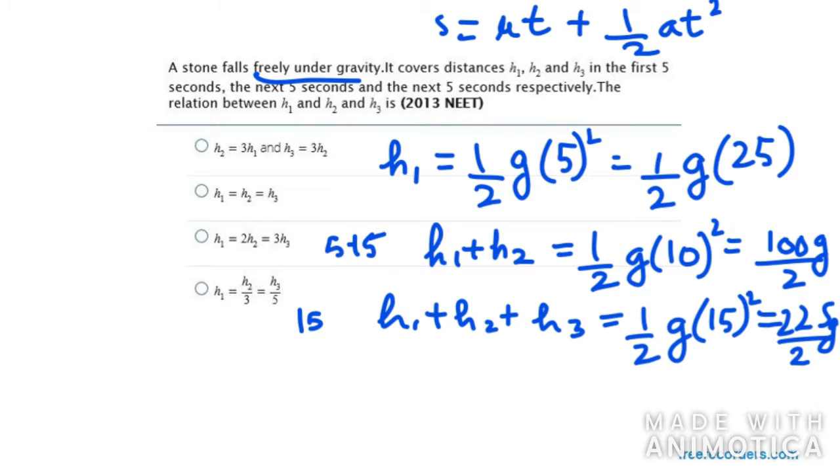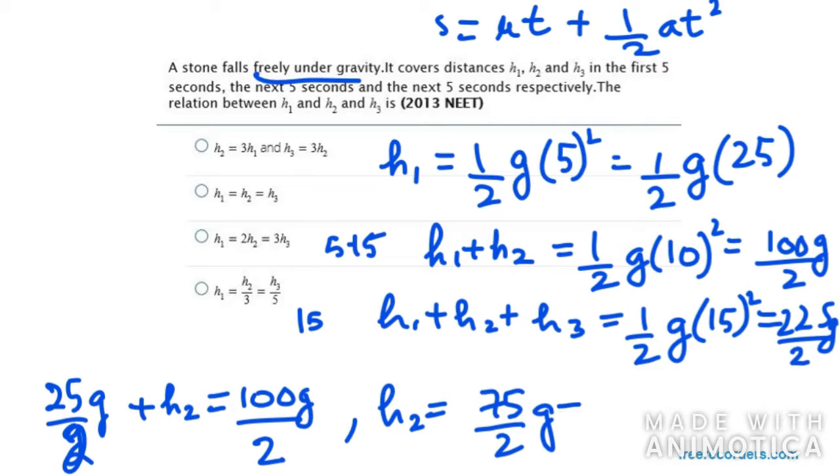Now we have 3 equations. If we solve these 3 equations, we will get our answer. First of all I will take the value of h1 in the second equation. So it will be 25g over 2, and h2 equals 100g over 2 minus 25g over 2. So my h2 value will be 75 over 2g. That is actually thrice of h1, because if you multiply 25 with 3, that gives us 75.